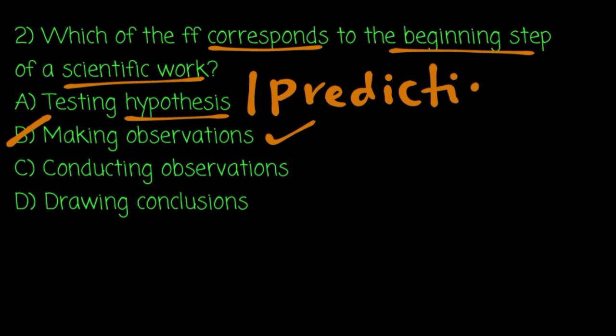A hypothesis is simply: after making observations, you attempt to explain what you observed. For example, let's say spontaneous generation — you form a hypothesis based on that. OK, so then comes the experiment to test the hypothesis.